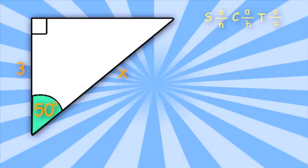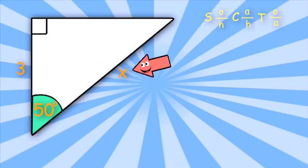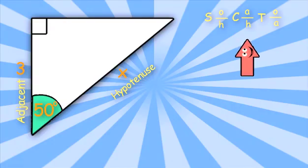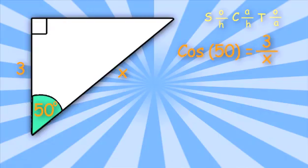Let's do one final problem. Here we're asked to find one of the sides of the right triangle. Let's start by finding the hypotenuse — I'll look across the 90 degree angle, and there it is. In relationship to the green angle, this side is opposite, and this side is next to the green angle so this is the adjacent side. We are given adjacent and hypotenuse, which means I'll use cosine of x. Cosine of 50 equals 3 over x, adjacent over hypotenuse.